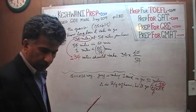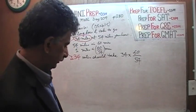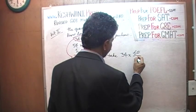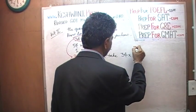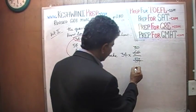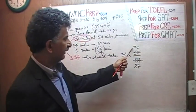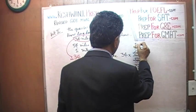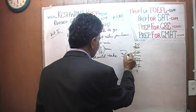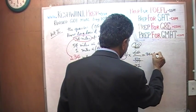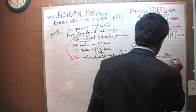Let's do it. 34 times 60 over 54. Divide 60 and 54 by 2: 60 becomes 30, and 54 becomes 27. Now divide top and bottom by 3: 30 becomes 10 and 27 becomes 9. So what we are left with is 34 times 10 on the top and 9 on the bottom. 34 times 10 is 340, divided by 9. That's our answer — let's divide it out.